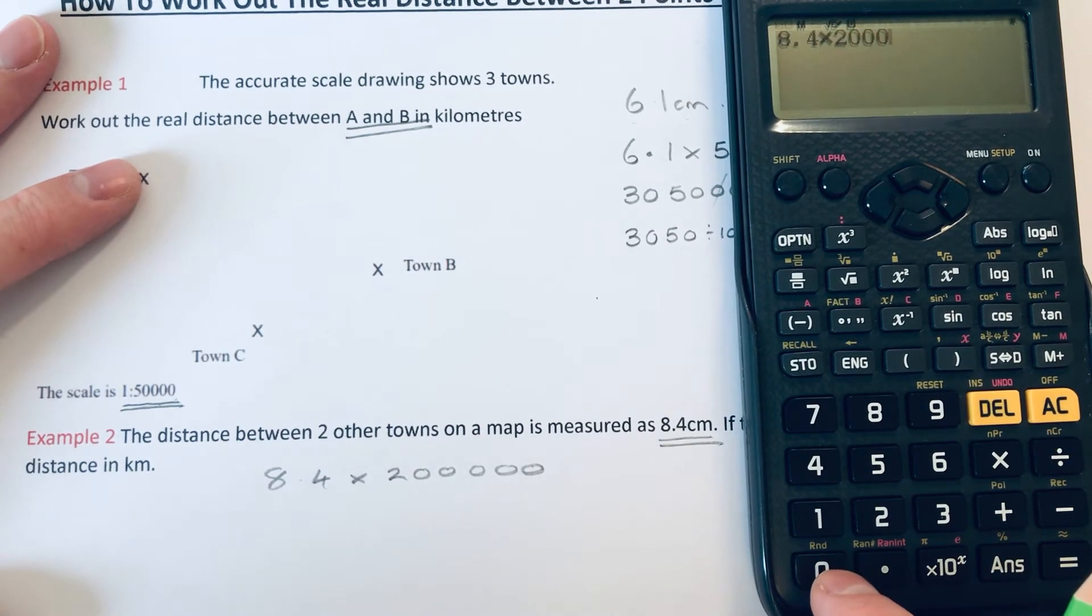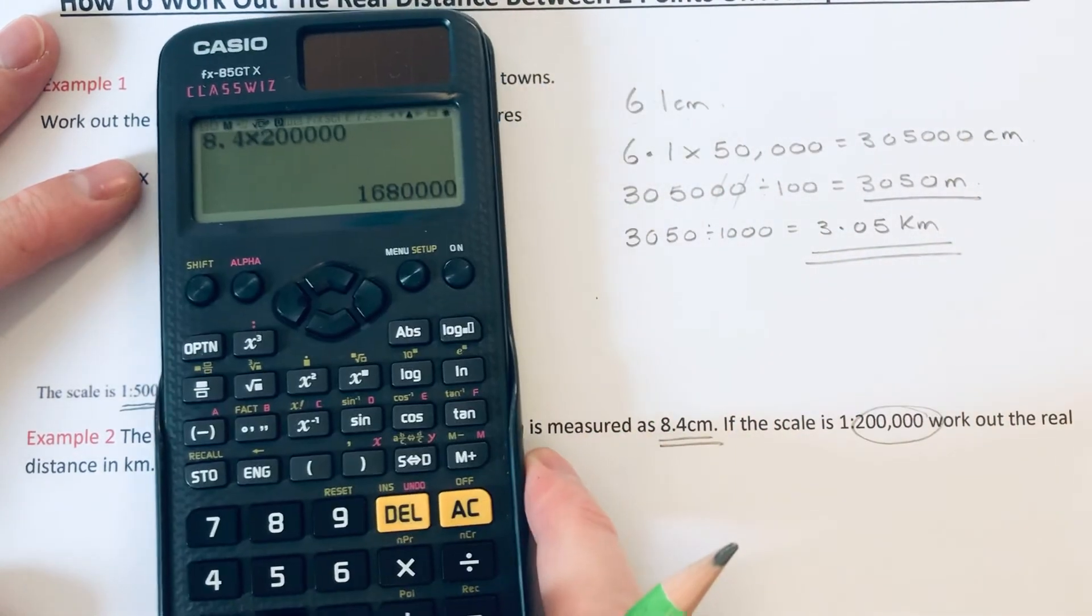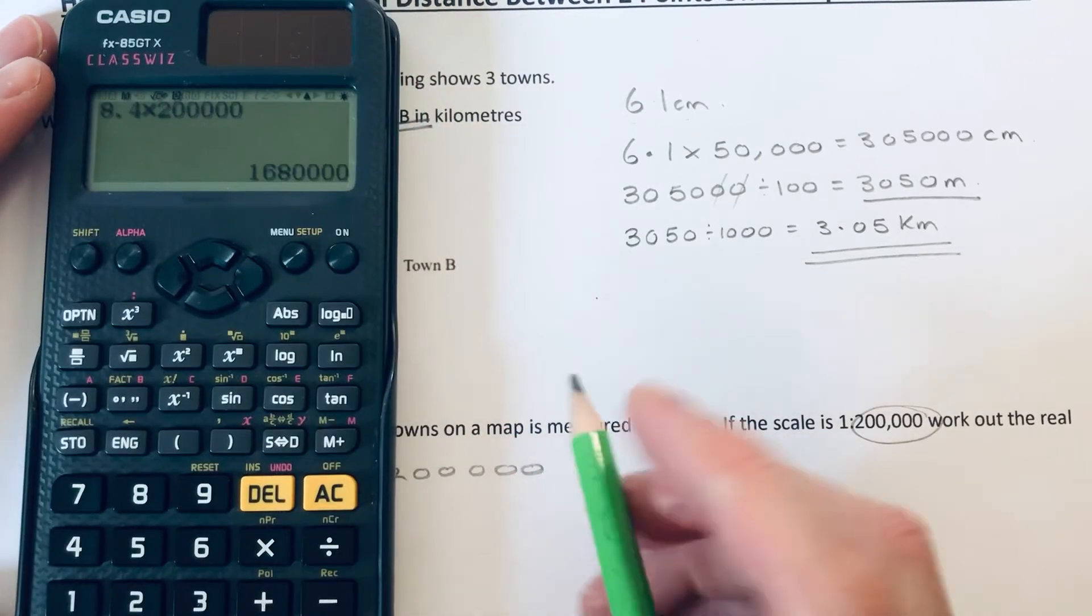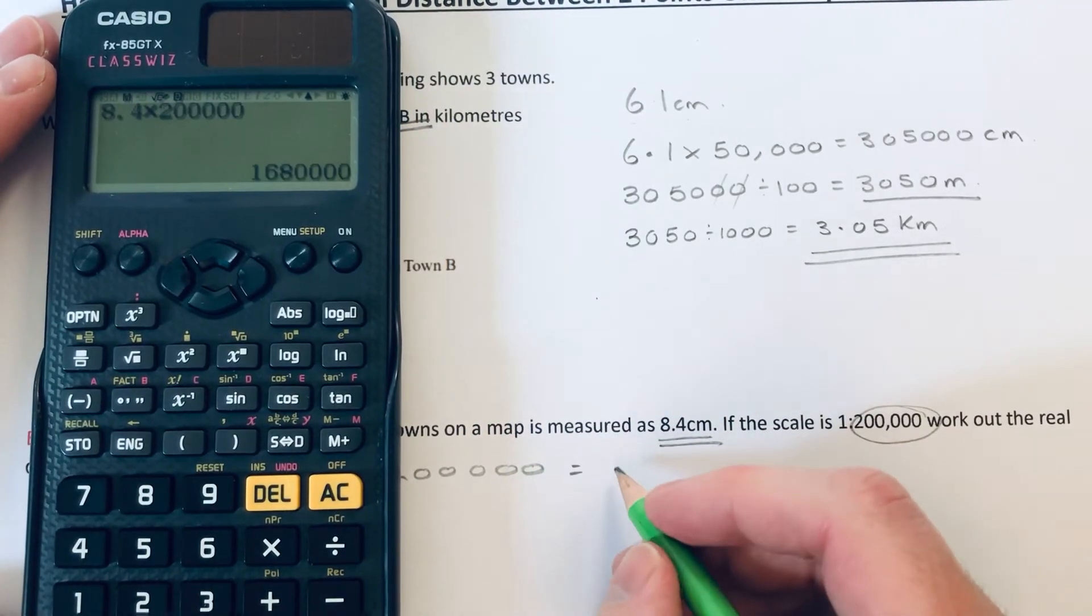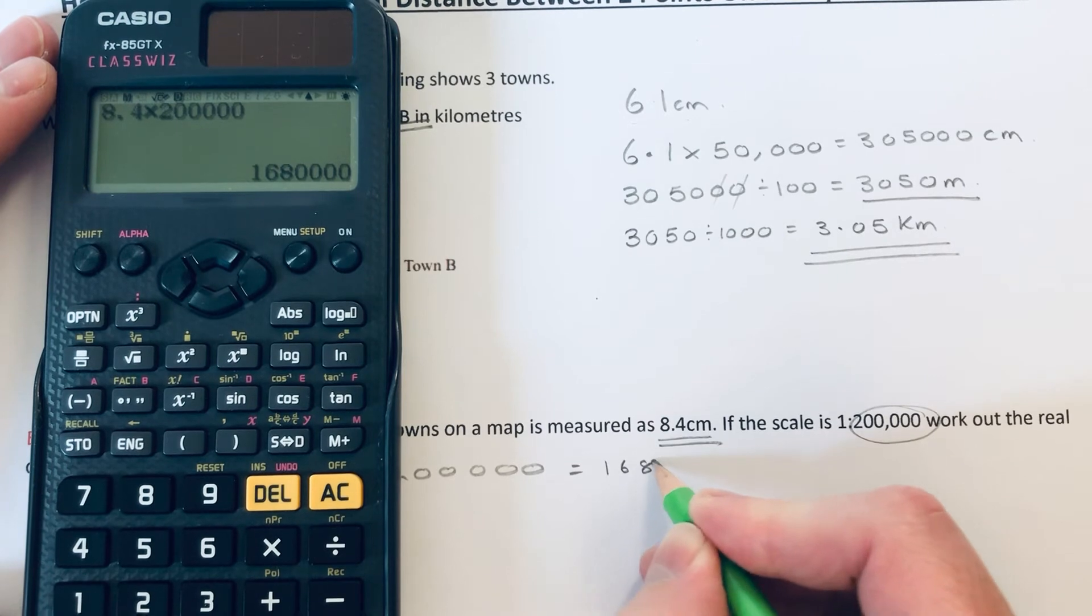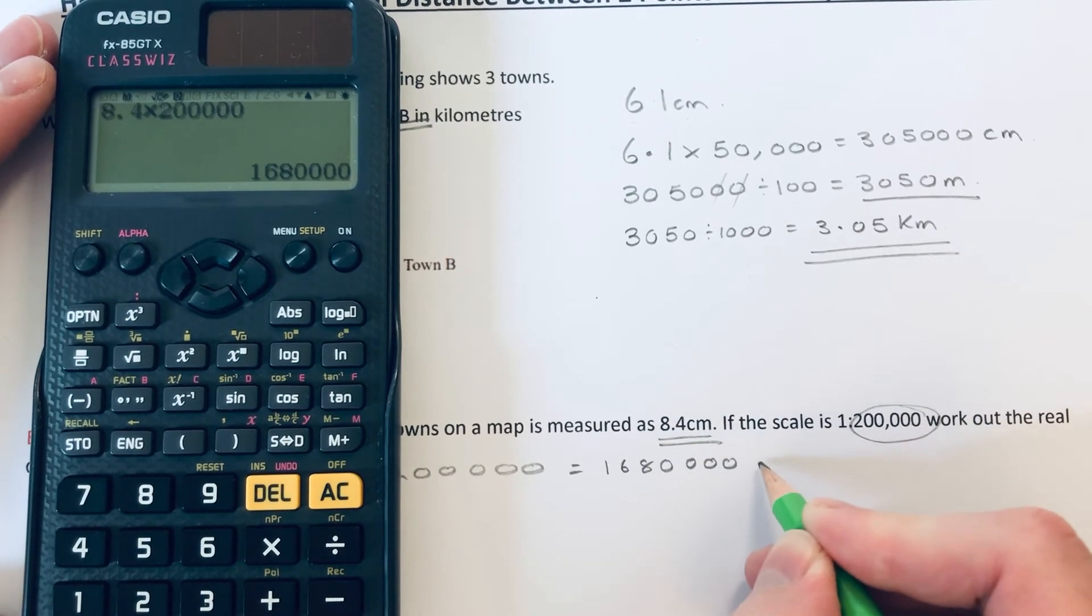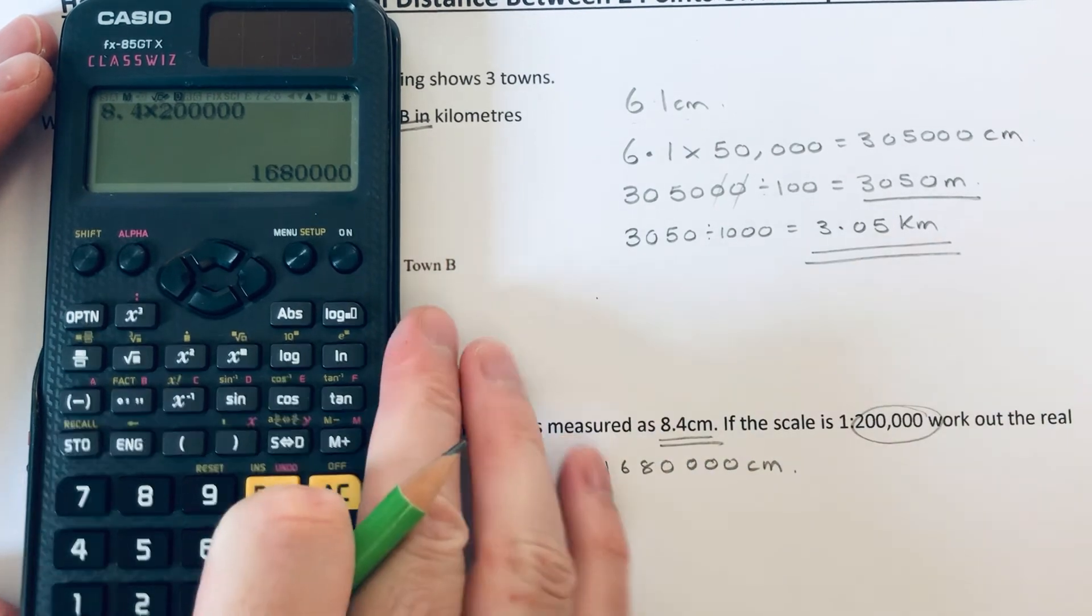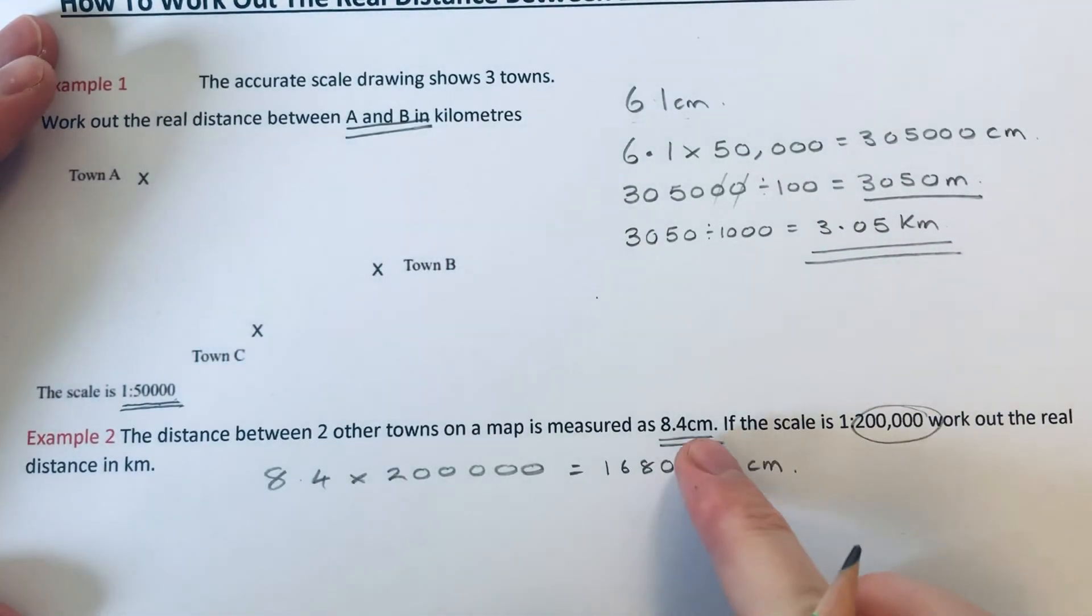That is coming out as quite a big number. It's 1 million 680,000. That is in centimeters because the distance was measured in centimeters. Like the last one, first we've got to change it into meters and then into kilometers.